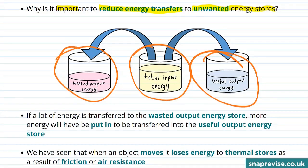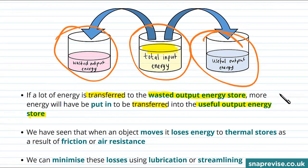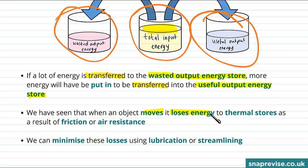The problem is that if a lot of the energy we put in ends up being transferred to the wasted output energy store, then we're going to have to put in even more energy so that enough is actually transferred into the useful output energy store. When an object moves, it loses energy to thermal stores as a result of friction or air resistance, and this would be a movement of energy into the wasted output energy store. We can minimize these losses using things like lubrication or streamlining.